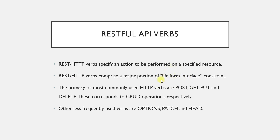Now, the most important thing about this interface is that it is a uniform interface. Across all the Web APIs that are available or that are going to be created in the future, there should be a uniform interface. To read a resource, I will use only a GET verb in all Web APIs. If I want to create a new resource, I will use the POST verb or POST method — and this will be common for all Web APIs.